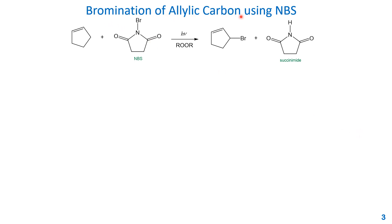Now we'll talk about the bromination of allylic carbon using NBS. This is the alkene and this is NBS — N-bromosuccinimide. This is a radical reaction using light or peroxide, and the product is the allylic bromide while the byproduct is succinimide.